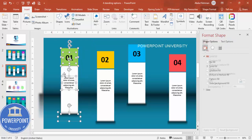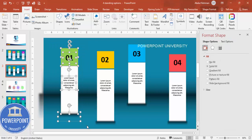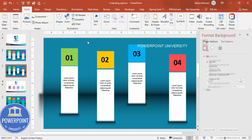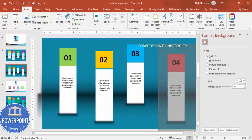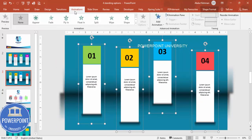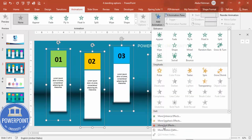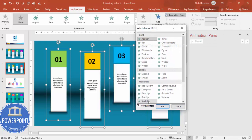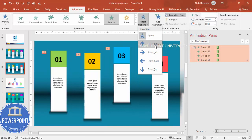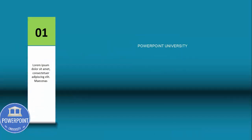Select all the shapes for each option using the mouse to highlight them, then press Ctrl+G to group them. Do this for options two, three, and four. Now select all four groups, go to Animations, enable the Animation Pane, click Add Animation, choose Stretch, click OK, and set direction to From Bottom. Set it to On Click or After Previous. When you play it, each option appears one by one.